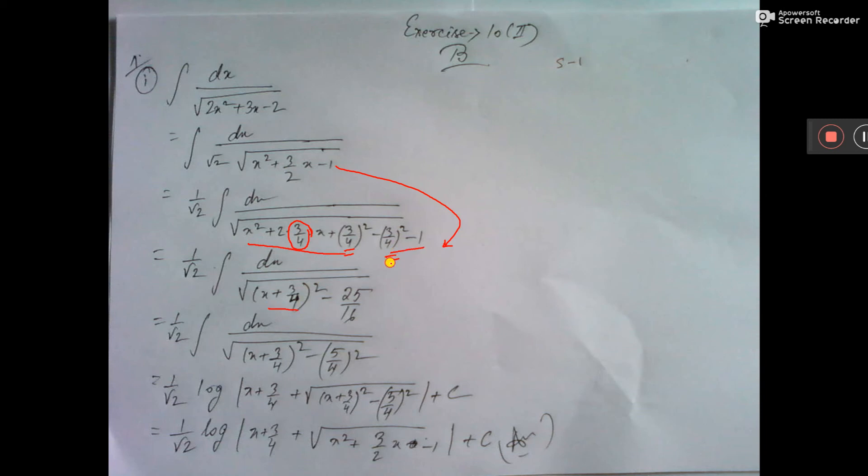If we adjust this one, the 9 by 16, so 16 and 9 is 25. 25 by 16 is coming, that is 5 by 4 whole squared.